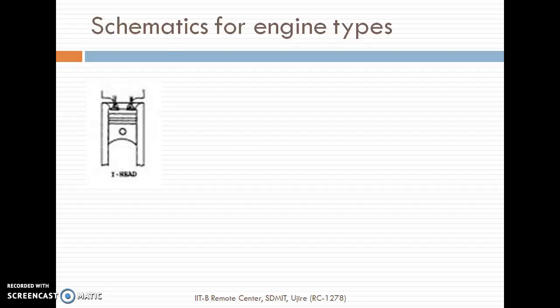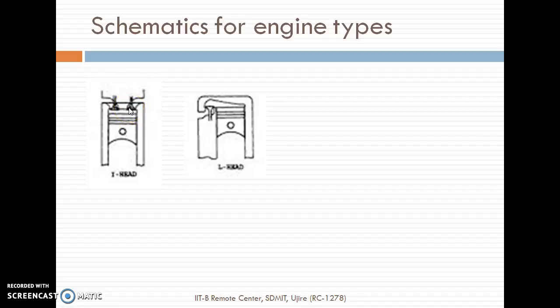This is the I-Head engine, where you can see both overhead valves for inlet as well as outlet. This is the most efficient design. The combustion space is confined in this small area, so that combustion will be very, very effective.